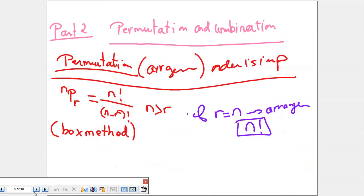Part 2 of this lesson is permutation and combination. Permutation means arrangement. When I say arrangement, it means there is an order — the order is important. To solve an exercise like this, we have two methods: the formula and the box method. I prefer the box method if you forget the formula.